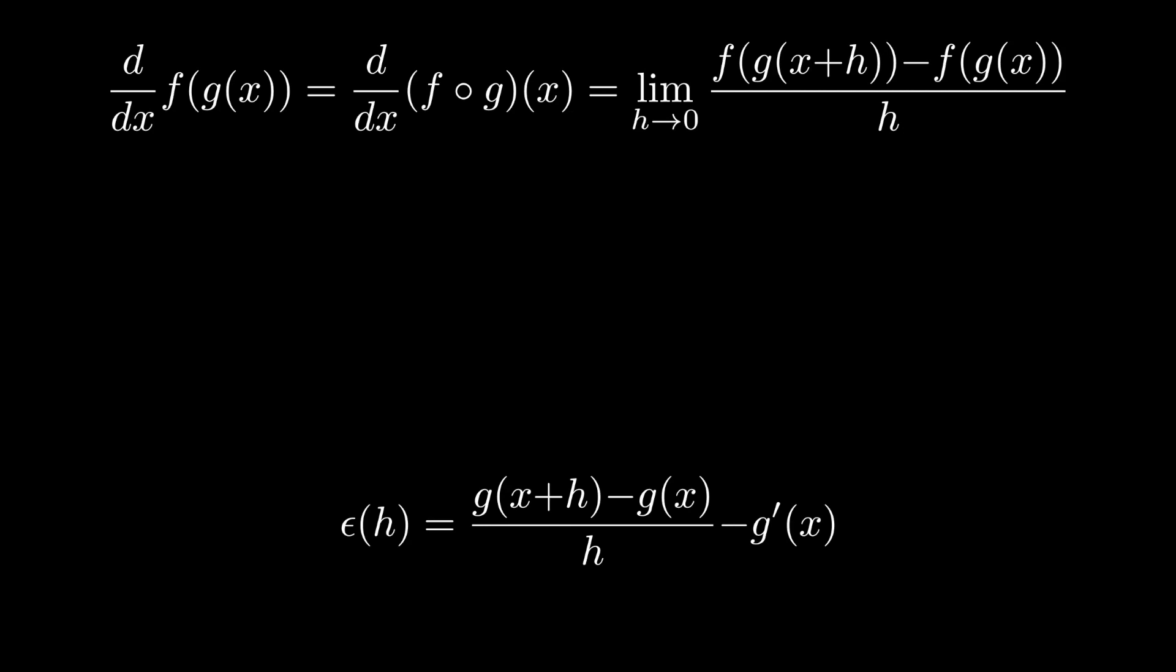Let's write down a function epsilon of h that represents the gap between some finite difference quotient and the actual gradient at x. Due to the definition of the derivative, we would expect this to go to 0 as h goes to 0. Now let's rearrange it into something that's a little bit more directly useful.